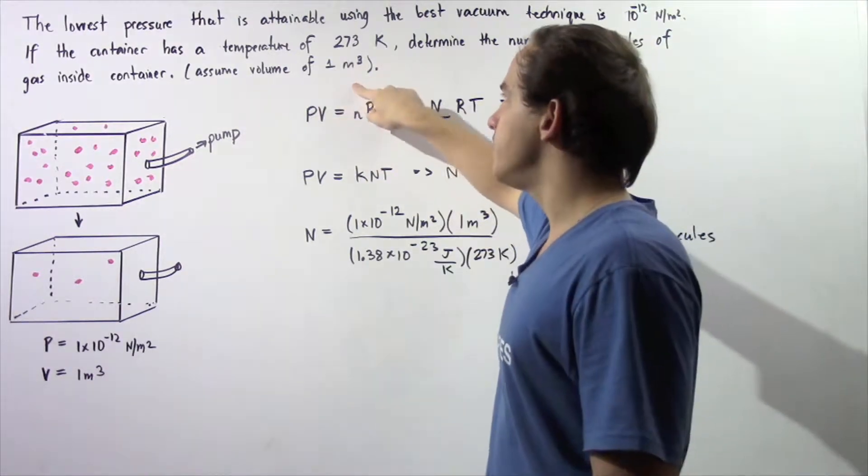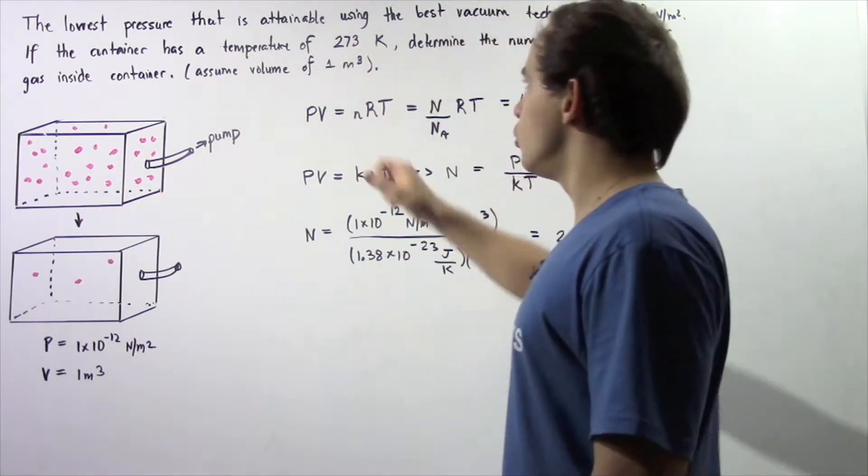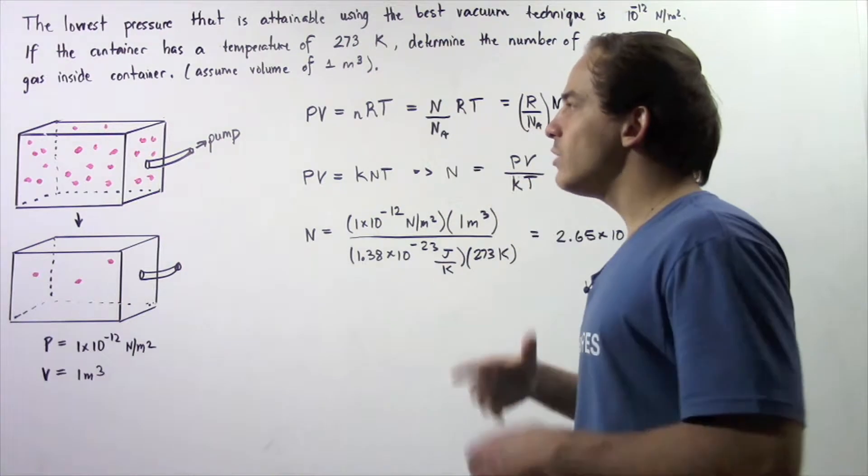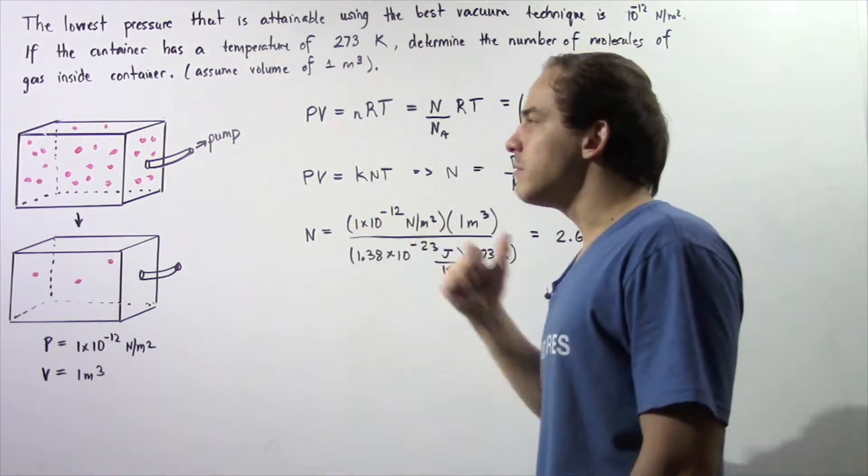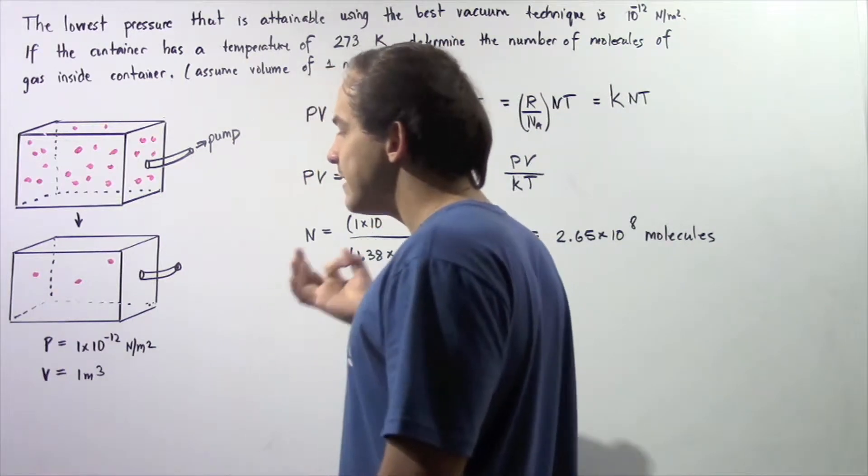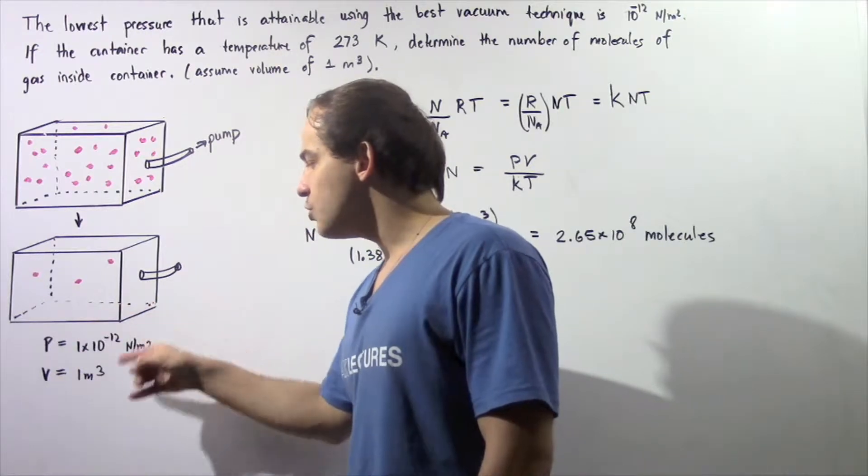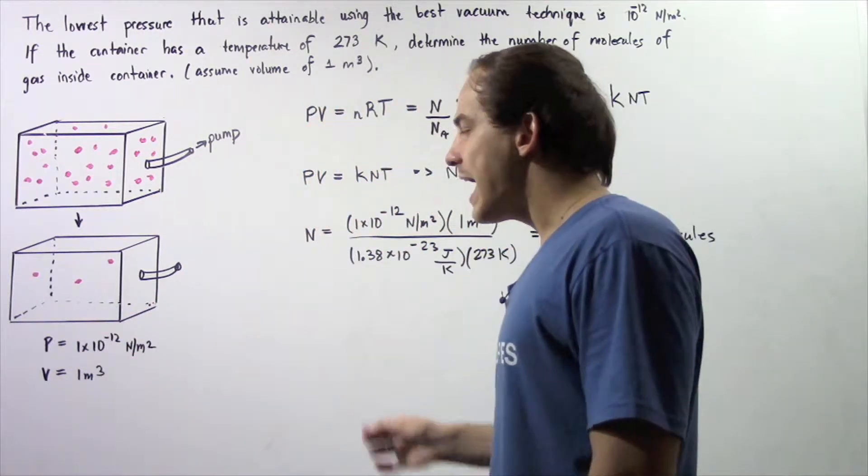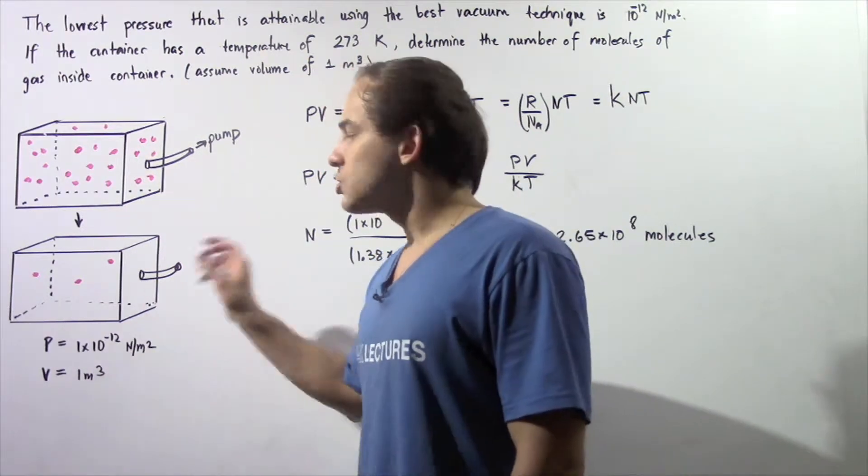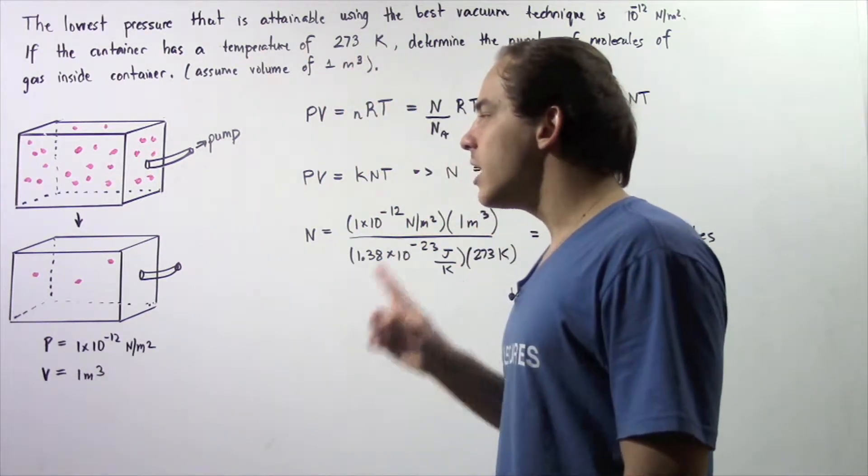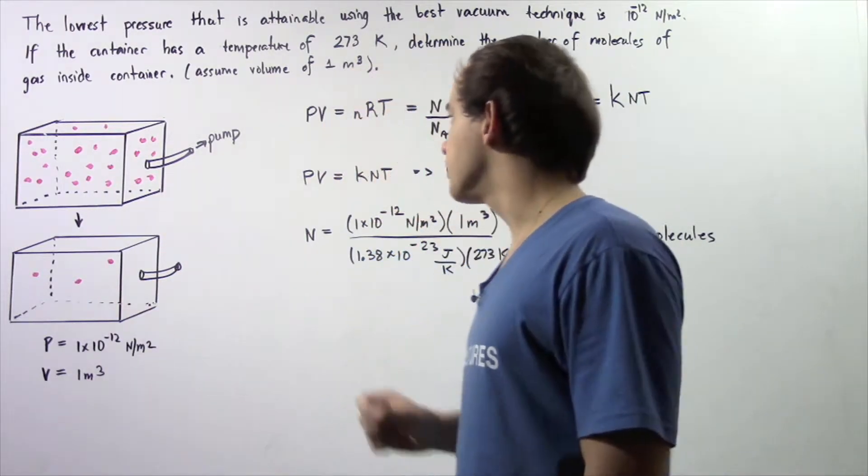So we have the following container that has a volume of 1 m³ and we use our vacuum technique to pump some of those molecules out. Eventually we get to a pressure of 1×10^-12 newtons per meter squared, and the volume remains at 1 m³. We want to determine the number of molecules of gas found inside this container.